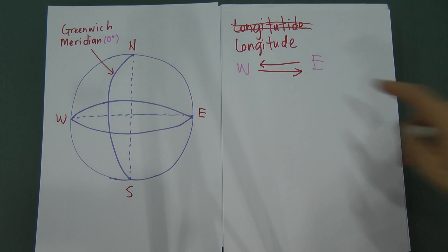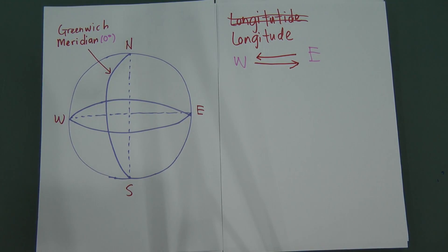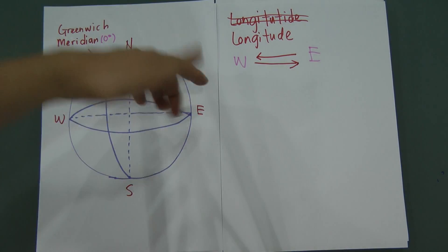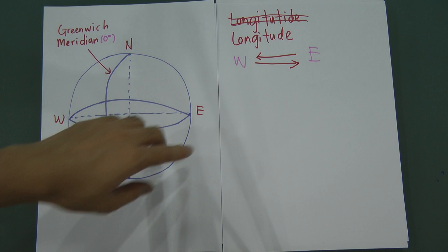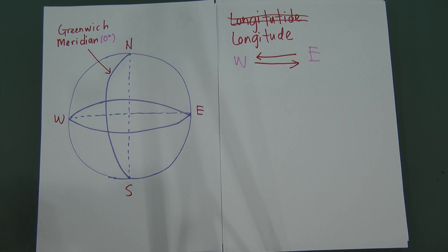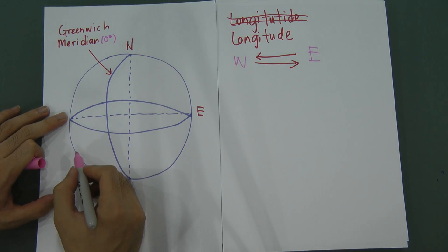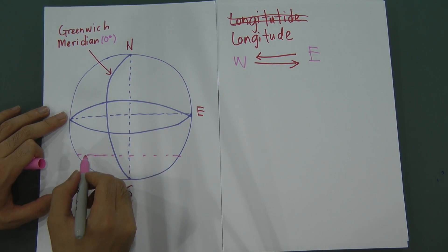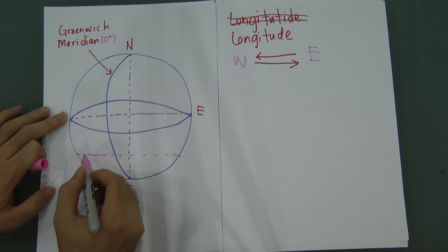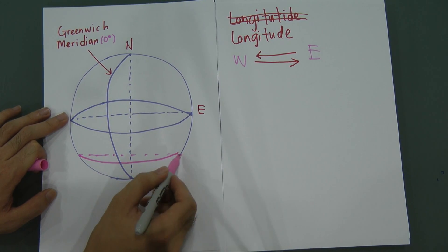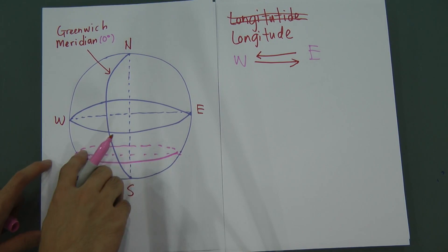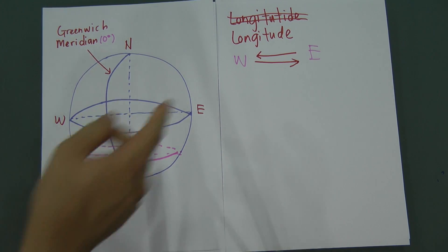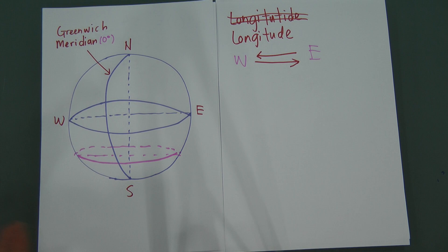So longitude means the flight is moving from east to west or west to east. The flight is not necessarily on the equator — it can be anywhere, at different plates of latitudes. When you see the word longitude, you have to understand it is moving from east to west or west to east.